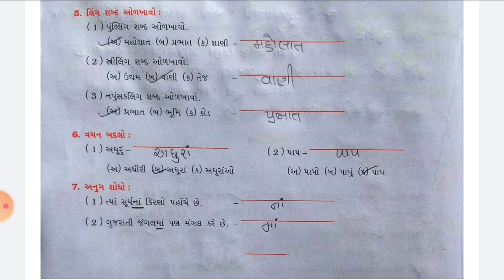Question 6 — Vachan Badlo (change the number/plurality). Number 1: Adhuru — correct option is Ba: Adhura. Number 2: Paap — correct option is Ka: Paap.